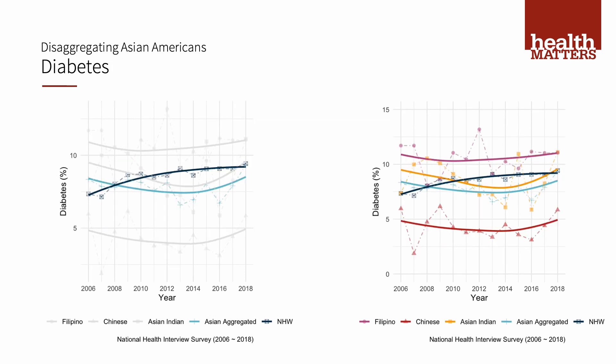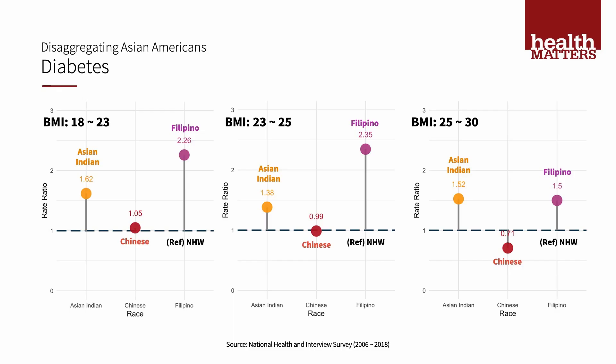Similarly for diabetes from 2006 to 2018, on the left, when we look at Asians aggregated, there appears to be no difference in diabetes compared to non-Hispanic whites. However, when we disaggregate the groups, we see high-risk groups again, notably Filipinos. We also have to be particularly concerned about the risk of diabetes at even lower levels of body weight among Asian subgroups. For a BMI of 18 to 23, considered normal for Asians, Asian Indians and Filipinos have higher risk of diabetes. Even at BMI 23 to 25 and the overweight category of BMI 25 to 30, Asian Indians and Filipinos at every level of weight have higher risk of diabetes compared to Chinese and non-Hispanic whites.